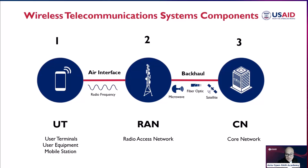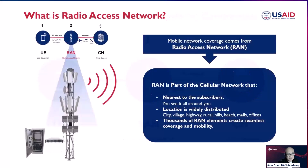There are different means to connect the core network and the Radio Access Network. These can be connected via microwave wirelessly, physical cable, or fiber optic. If there's a challenge in terrain or large distances and you are limited by the curvature of the earth, you would use a satellite to interconnect the two. So these are the main components of a wireless telecommunication system: user terminals connected to the Radio Access Network and the core network.